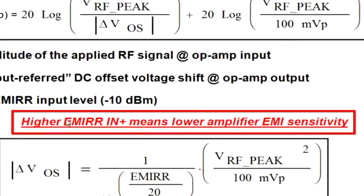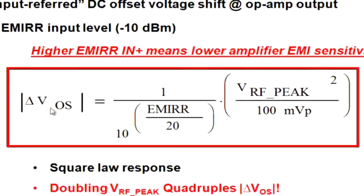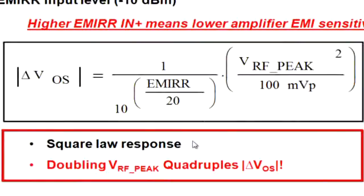The most important thing is that higher EMIRR means lower amplifier EMI sensitivity, so in an EMI-sensitive situation you want an amplifier with high EMIRR. If we rearrange the equation in terms of offset shift, we get a squared term relative to the peak RF voltage — a square law response resulting from diode rectification. The important point is: if we double the RF voltage applied, the offset shift quadruples. Conversely, if we cut the RF applied in half, the offset drops to one quarter of the value.